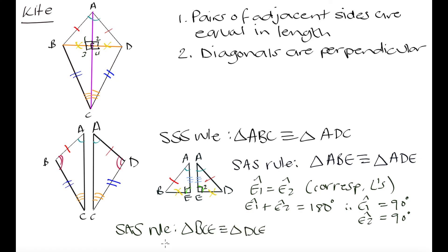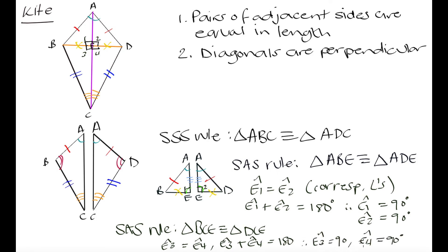By the side-angle-side rule, triangle BCE is congruent to triangle DCE. That means angle E3 equals angle E4, and angle E3 plus angle E4 equals 180 degrees. So angle E3 equals 90 degrees and angle E4 also equals 90 degrees. We have now proven that each of these angles forms a 90-degree angle, and therefore the diagonals in a kite are perpendicular to one another.